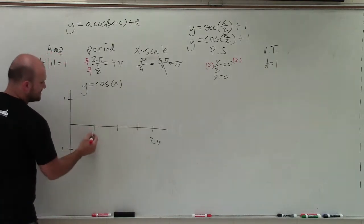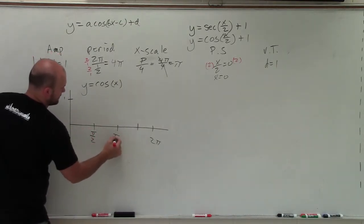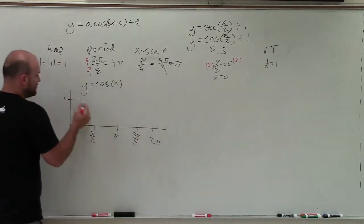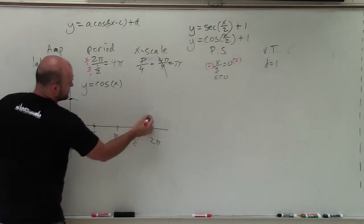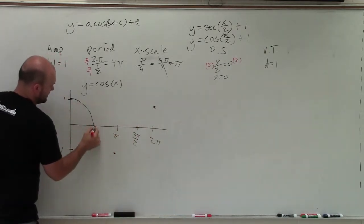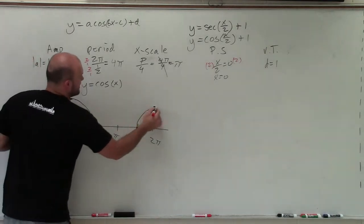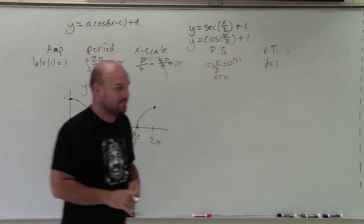The x scale for this is pi halves. OK? And the initial period starts at 1, intersect, minimum, intersect, maximum. So it looks something like this. Again, this is y cosine of x. That's what I'm graphing there.